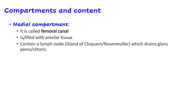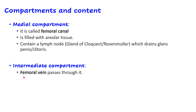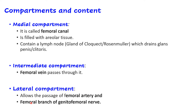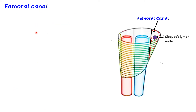To revise: the medial compartment, also called the femoral canal, is filled with areolar tissue and contains the gland of Cloquet or Rosenmüller. This lymph node drains the glans penis in males and the clitoris in females — this is very important for MCQs. The intermediate compartment transmits the femoral vein, and the lateral compartment transmits the femoral artery and the femoral branch of the genitofemoral nerve.